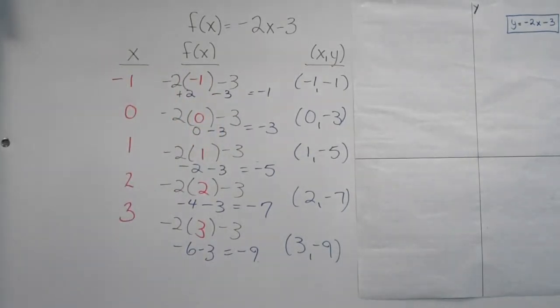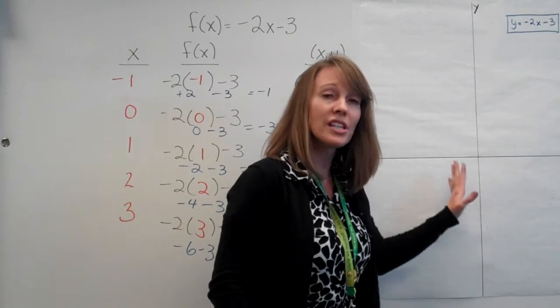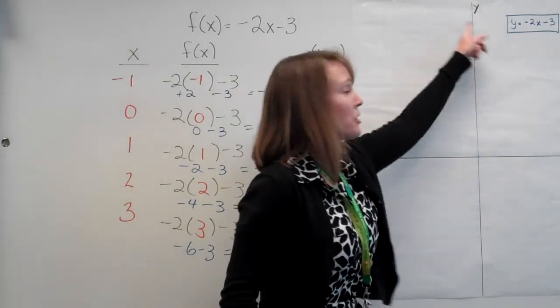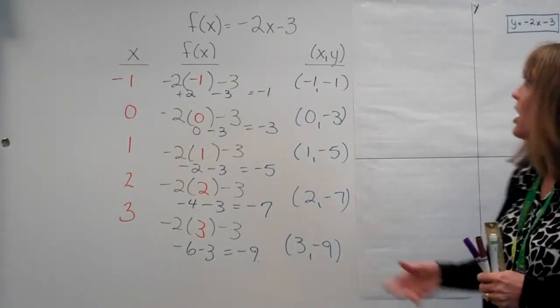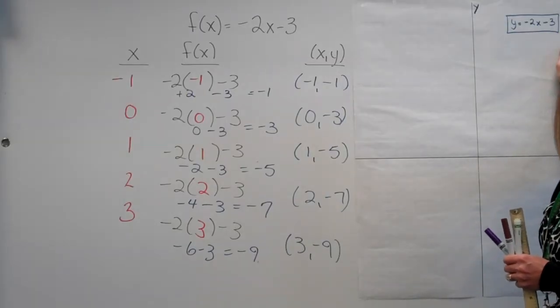Now we're going to graph this. First thing we're going to do is we're going to make sure we have the x and the y-axes. Use the lines of the graph paper. Don't make up your own. Make sure they're labeled as points. Make sure you have the title on your graph. The title is the equation that you are graphing.